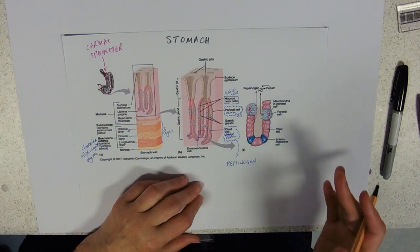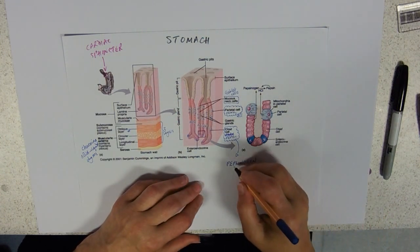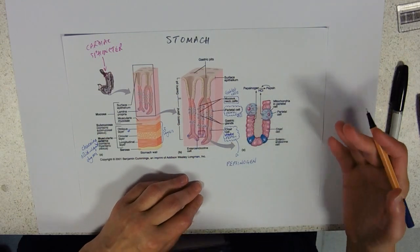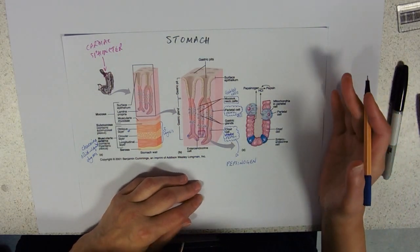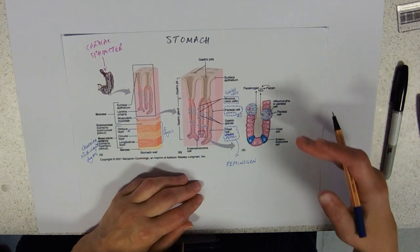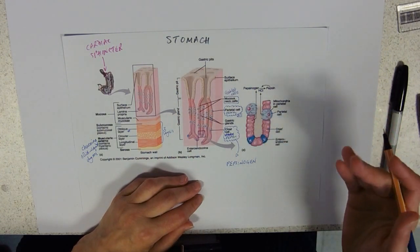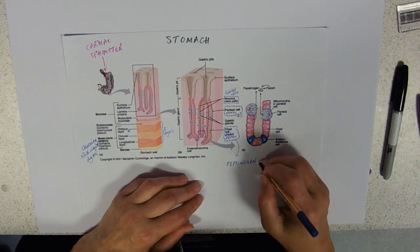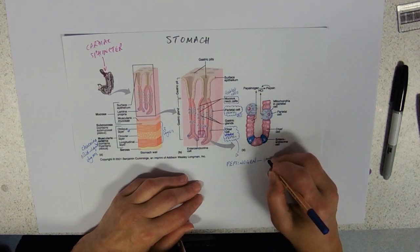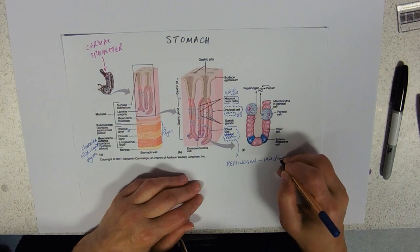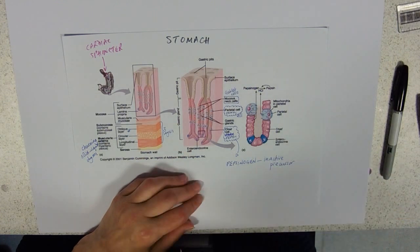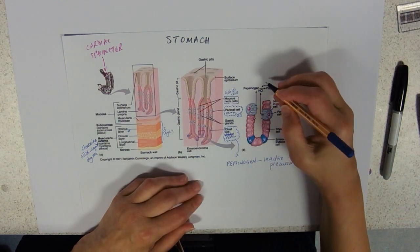This is because pepsin is a protease and will digest any protein it collides with, including proteins on cell membranes or inside cells if released in its active form. Pepsinogen is what we call an inactive precursor.